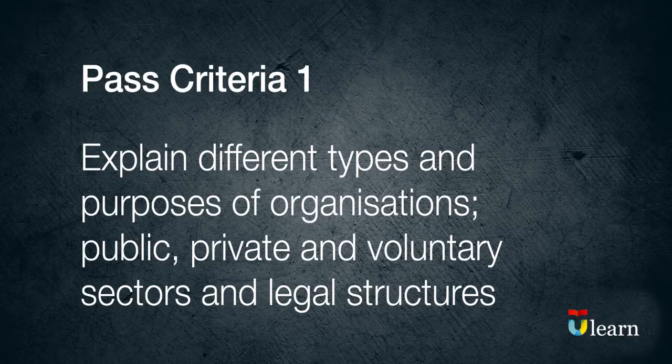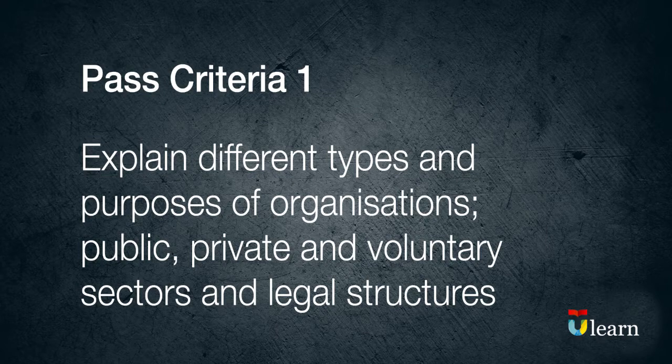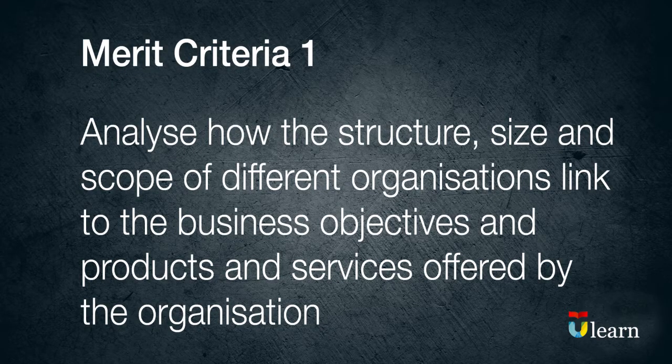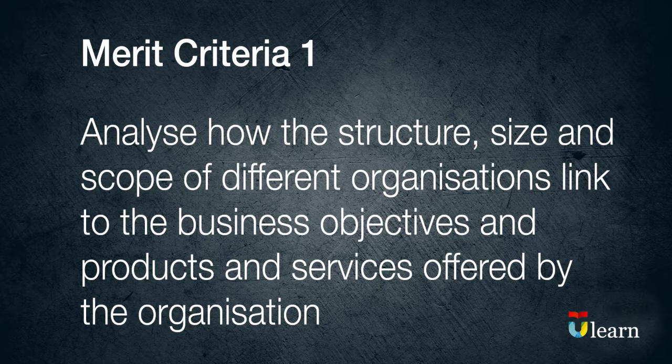For example, the first pass criteria for learning outcome 1 requires you to explain different types and purposes of organisations. The merit criteria requires you to expand on this and asks you to analyse how the structure, size and scope of different organisations link to the business objectives and products and services offered by the organisation.